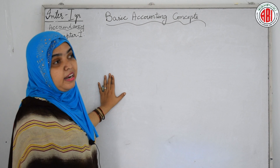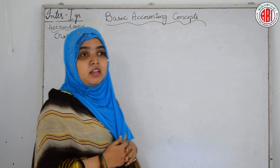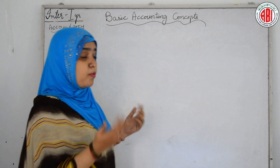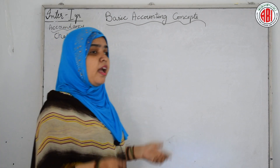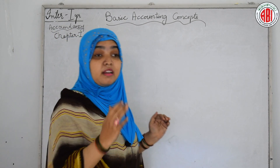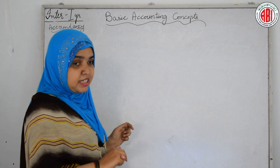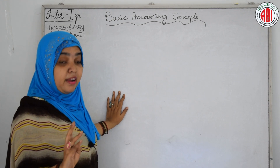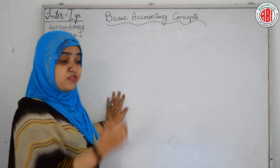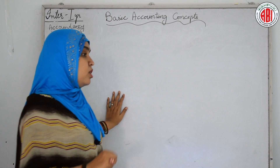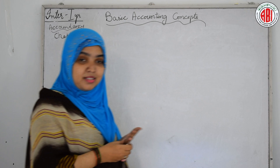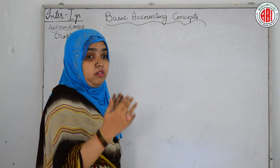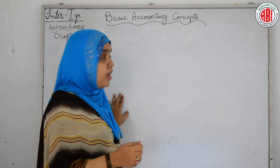Our next basic accounting concept is purchases. If we have to run the business, we have to invest and spend money on purchases — we have to purchase building, land, computers, machinery, and everything. Purchases are the expenses incurred by the business, and they are of two types: cash purchases and credit purchases. Cash purchases means we pay cash to get the item. Credit purchases are those for which we didn't pay cash immediately — we take it on credit but have to pay later on.